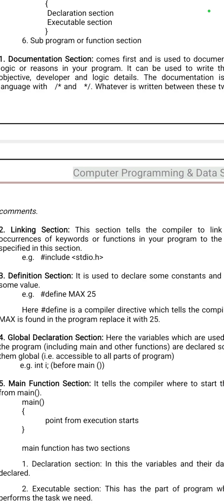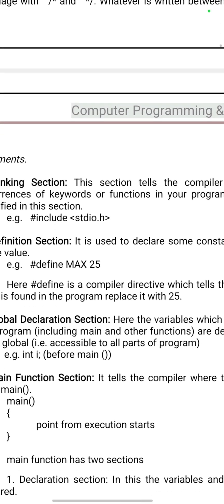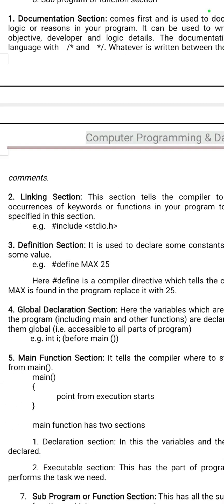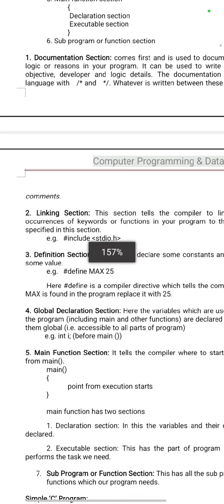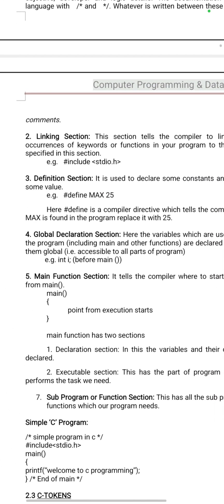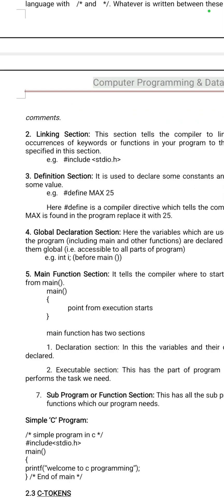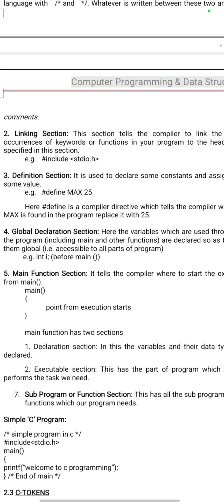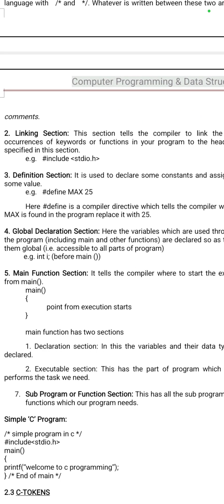In the definition section, if we want to declare any constant values, that is declared using hash define. In the global declaration section, whenever we are using any function programs, we go for the global declaration section.